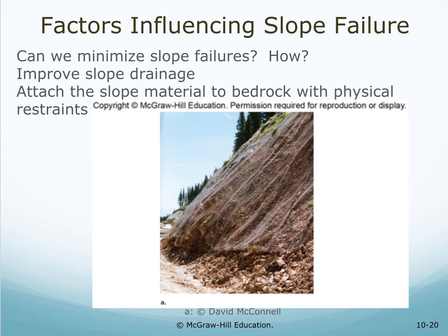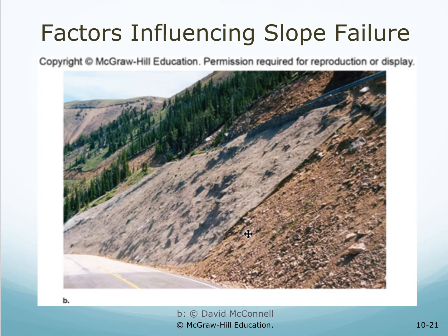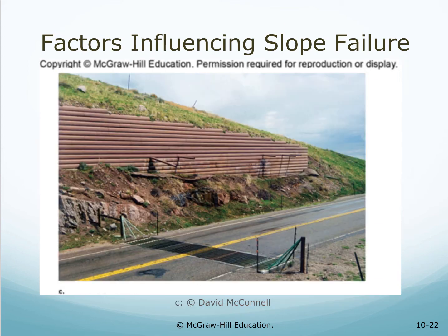Can we minimize slope failures? Here's a photograph showing one way the DOT is attempting to keep debris from falling onto the road. Methods include improving slope drainage and attaching slope material to bedrock with physical restraints. This is the Beartooth Highway in Montana — you can see it comes around with 82 hairpin curves, and slope failure is obvious. There are many places where the DOT has installed measures to keep debris off the road.